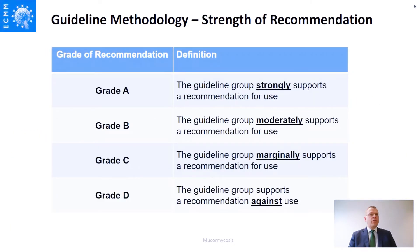The strength of recommendation used in these guidelines has three positive grades — A, B, and C — and grade D as the only recommendation against use of a diagnostic test, treatment, or other measure in a specific population. Grades A, B, and C are defined by strong, moderate, or marginal support from the group for a recommendation.